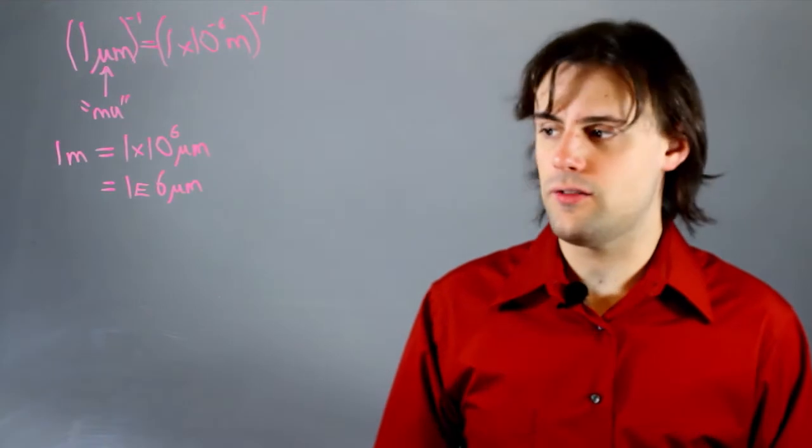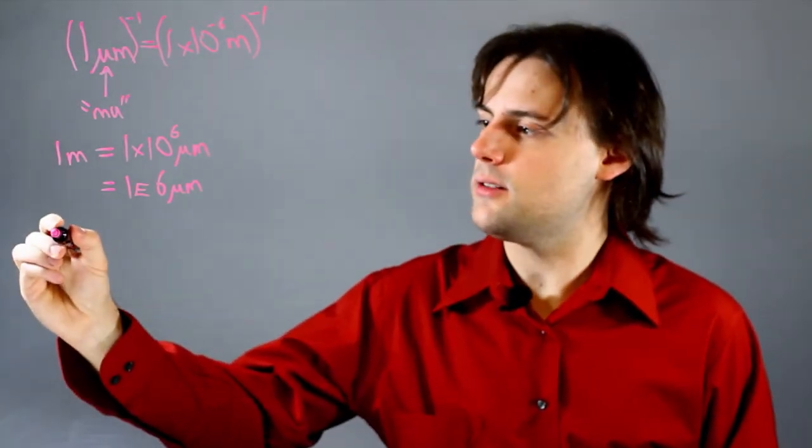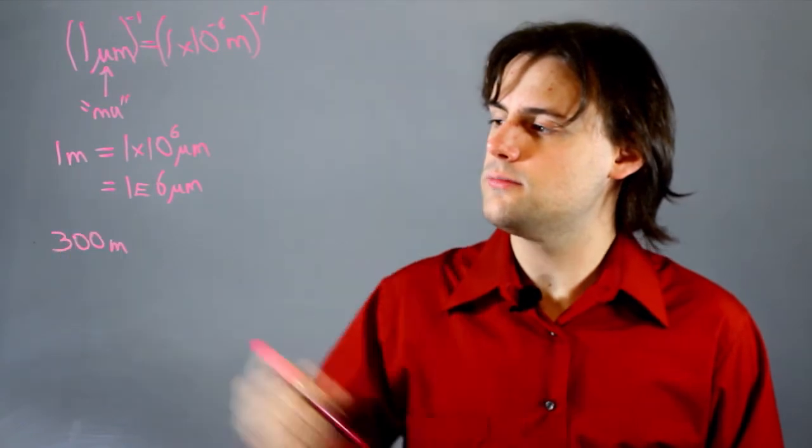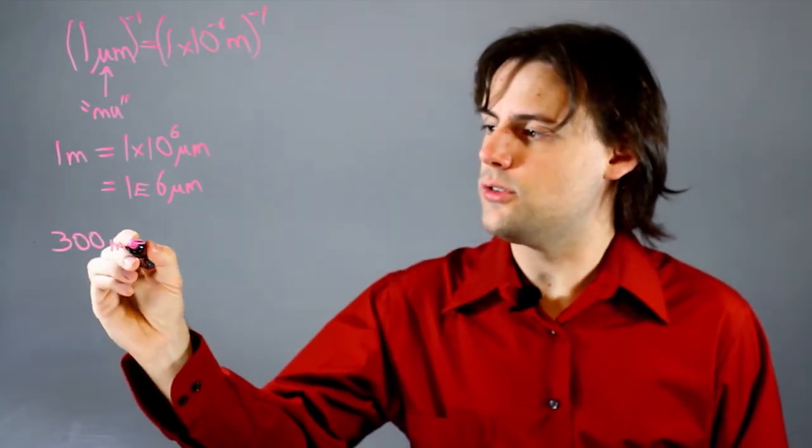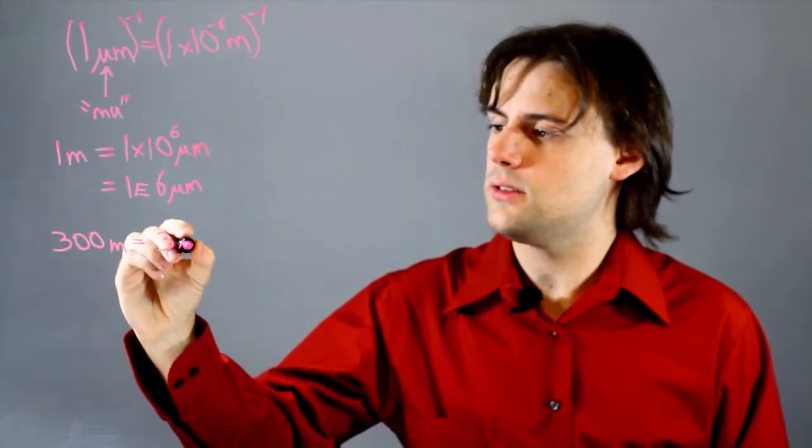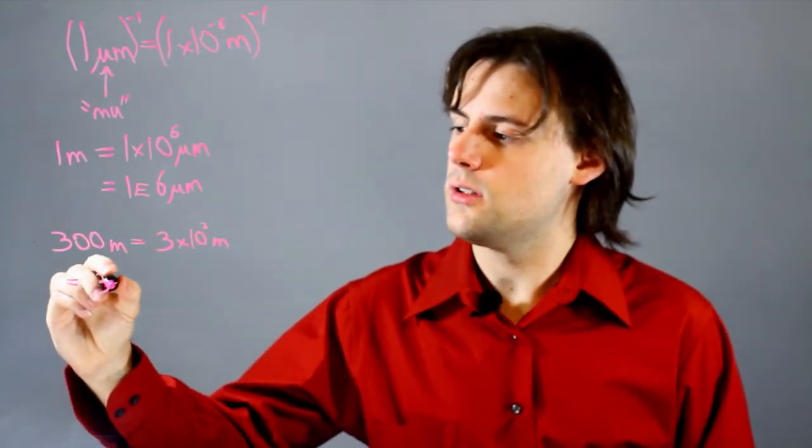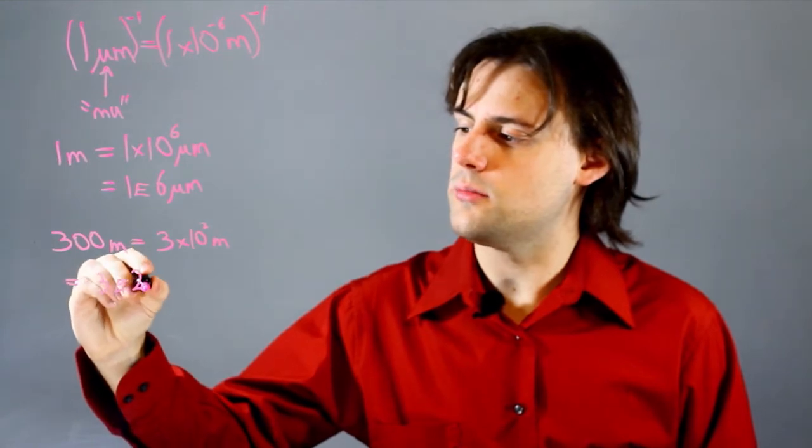So as an example, if I have a measurement, say a length of 300 meters, this is equal to 3 times 10 to the 2 meters, which is equal to 3e2 meters.